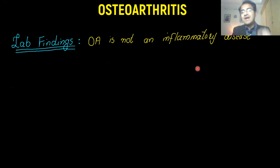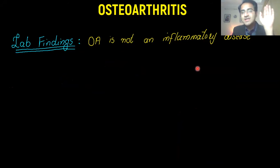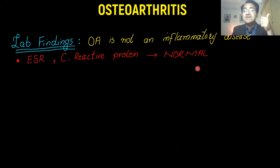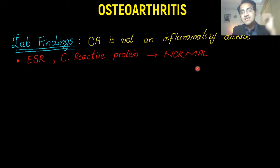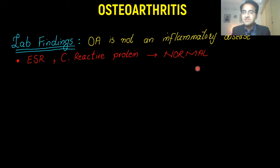What are the lab findings in osteoarthritis? Osteoarthritis is not an inflammatory disease, so do not expect inflammatory markers like ESR and CRP to be elevated. Unlike rheumatoid arthritis and other inflammatory joint diseases like gout, osteoarthritis is an age-related degenerative disease and will not cause elevation of ESR and CRP levels.